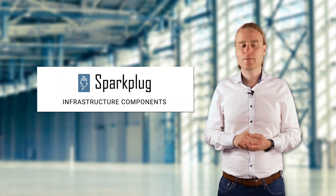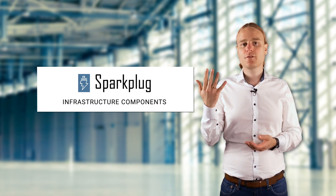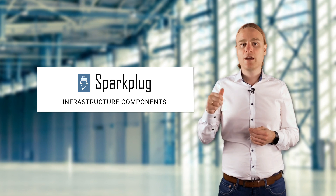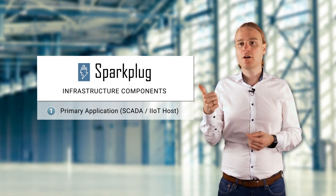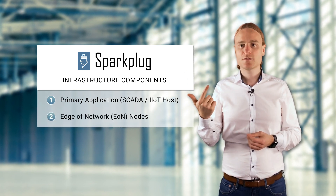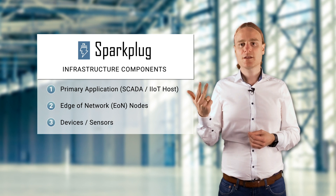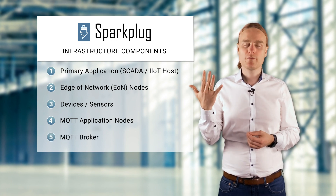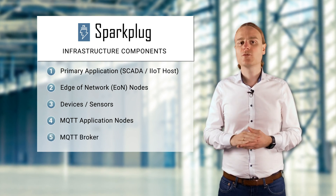Welcome back to the MQTT Sparkplug Essentials. In this part of the series, we are going to cover the components of any Sparkplug infrastructure. There are five critical components in any Sparkplug scenario: number one, a primary application or SCADA/IIoT host; edge of network nodes or E or N nodes; devices and sensors; MQTT application nodes; and an MQTT broker. Let's dive into all the components in detail.